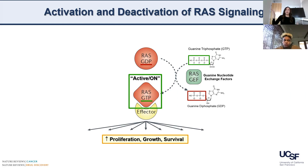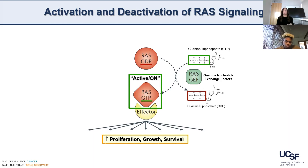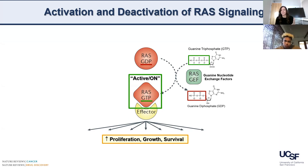So that light switch gets flipped on, and as that gets flipped on, it creates all these effects. What happens is that it causes the cells to proliferate, to grow, and it tells them they're going to survive. And that's really fantastic if that's what you want to do.